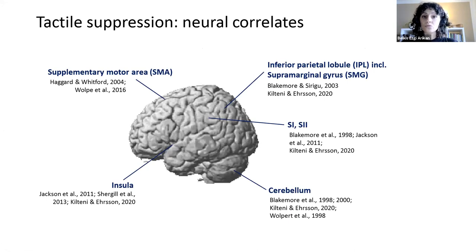So when we look at the neural implementation, it's also in line with what we see in behavior. So tactile suppression has been found to be associated with reduced activation in somatosensory areas, such as the primary and secondary somatosensory cortices, S1, S2, as well as the insula.